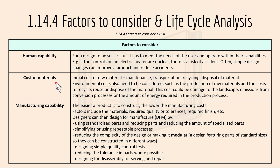The cost of material includes the initial cost of raw material and maintenance, transportation, recycling and disposal — all calculated and included in the overall cost. Environmental costs also need to be considered, such as the production of raw material and the cost to recycle, reuse or dispose of the material. This includes damage to the landscape, emissions from conversion processes, or the amount of energy required in the production process.